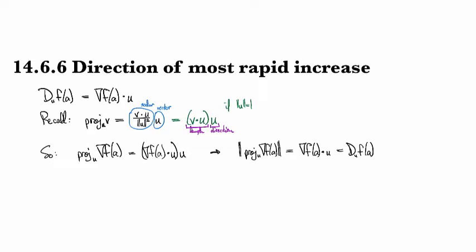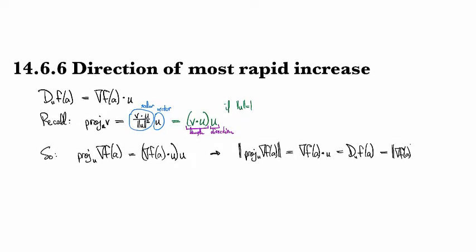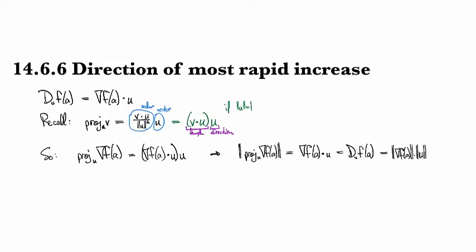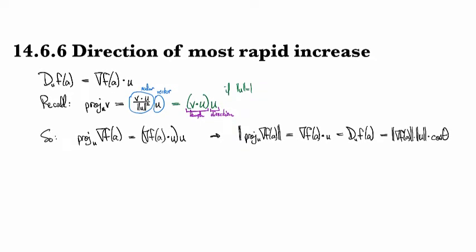And from the formula for the dot product, we see that this is also equal to magnitude of the gradient times magnitude of the unit vector times the cosine of the angle between them. That's a theorem about dot products, right?